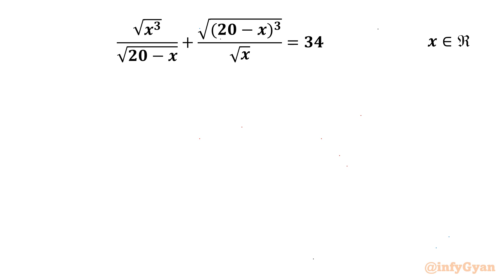Welcome back to Infigyan, my dear friends. In today's video we have one very interesting and challenging rational equation: the square root of x cubed over root of (20 minus x), plus the square root of (20 minus x) cubed over root x, equals 34. We are going to find real solutions only.